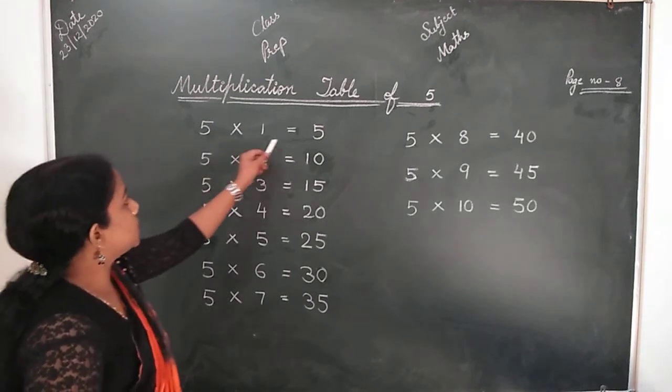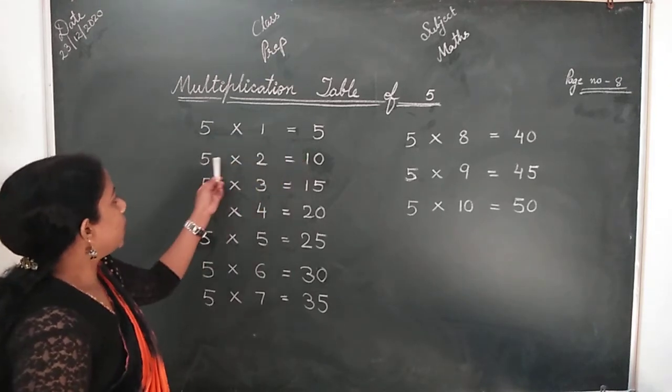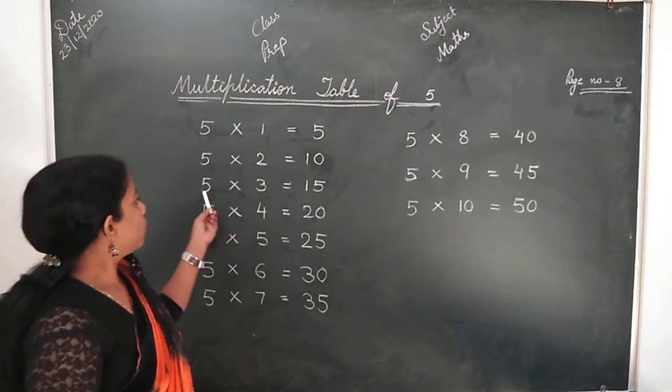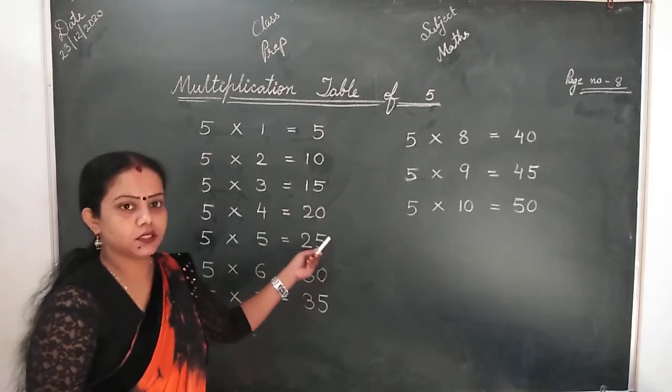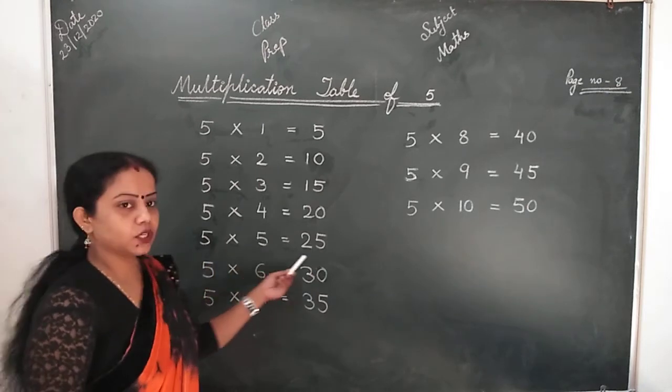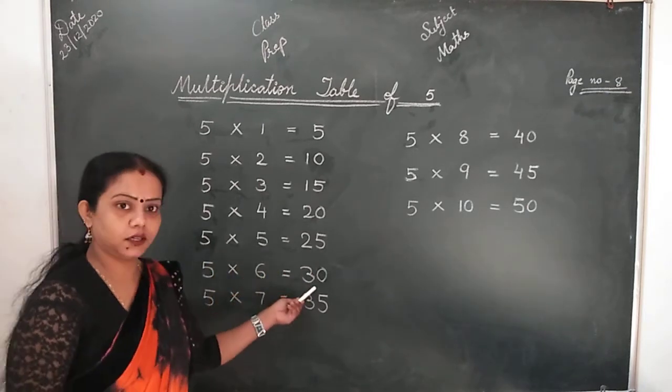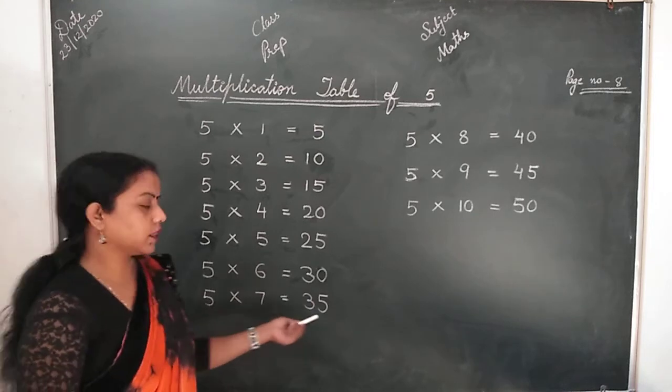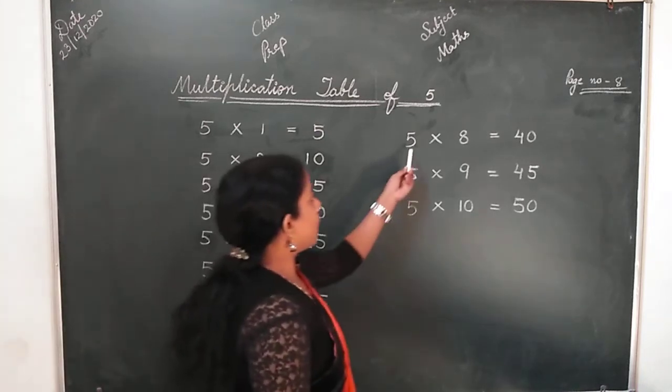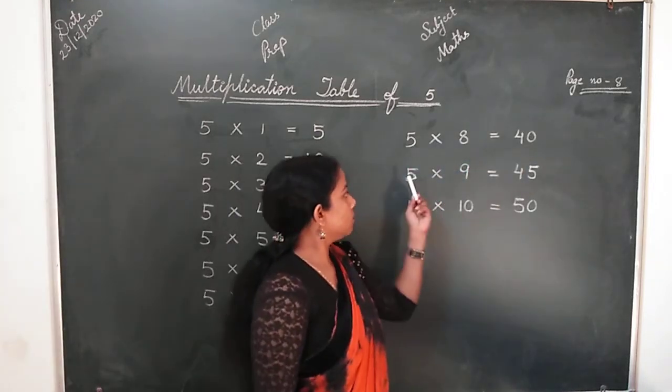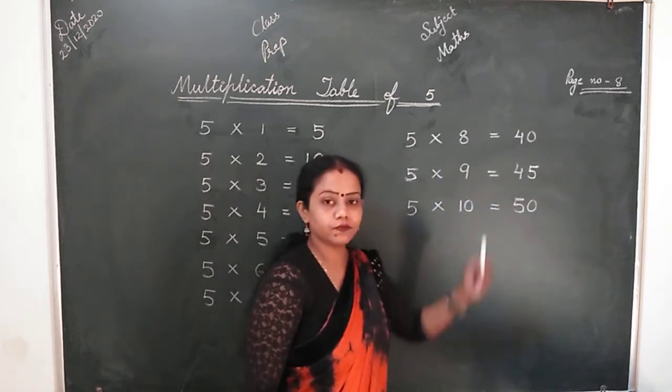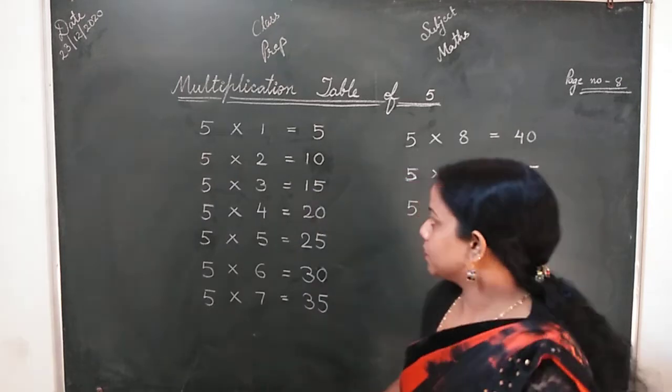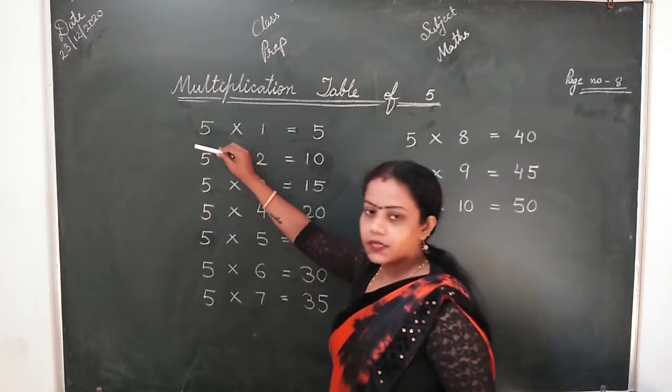5, 1s are 5. 5, 2s are 10. 5, 3s are 15. 5, 4s are 20. 5, 5s are 25. 5, 6s are 30. 5, 7s are 35. 5, 8s are 40. 5, 9s are 45. 5, 10s are 50. Ek aur koli hai baar. Once again.